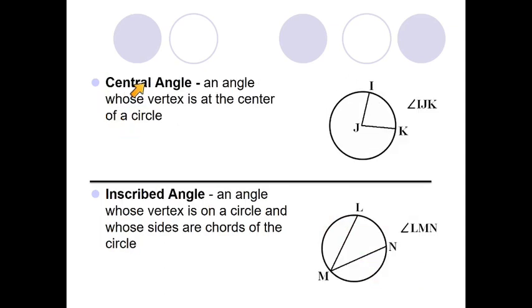Now a central angle is an angle whose vertex is at the center of the circle. So here is central angle IJK, J being the center of the circle, and IJ and JK being radii of the circle. So if you have an angle that's made up with two radii meeting at the center of the circle, that's called a central angle.